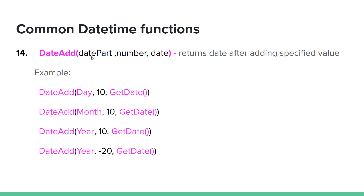DATEADD takes a date part and a value. The date of the date is the date part, and the function returns the date after adding the specified value. For example, if the date part and value are provided, we will print the resulting date.